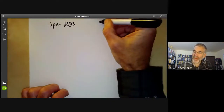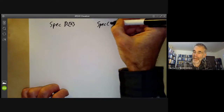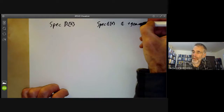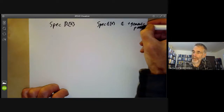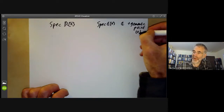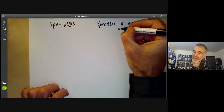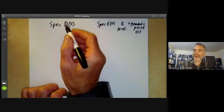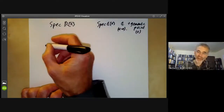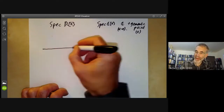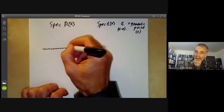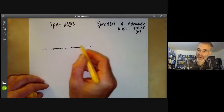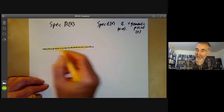We saw earlier that the spectrum of C[x] just looks like C together with a generic point. This generic point comes from the ideal zero, and the points of C correspond to the ideals x minus alpha. So you might guess that the spectrum of R[x] is going to look like the real numbers R together with a generic point — a line of real numbers and some weird generic point whose closure is the whole thing.